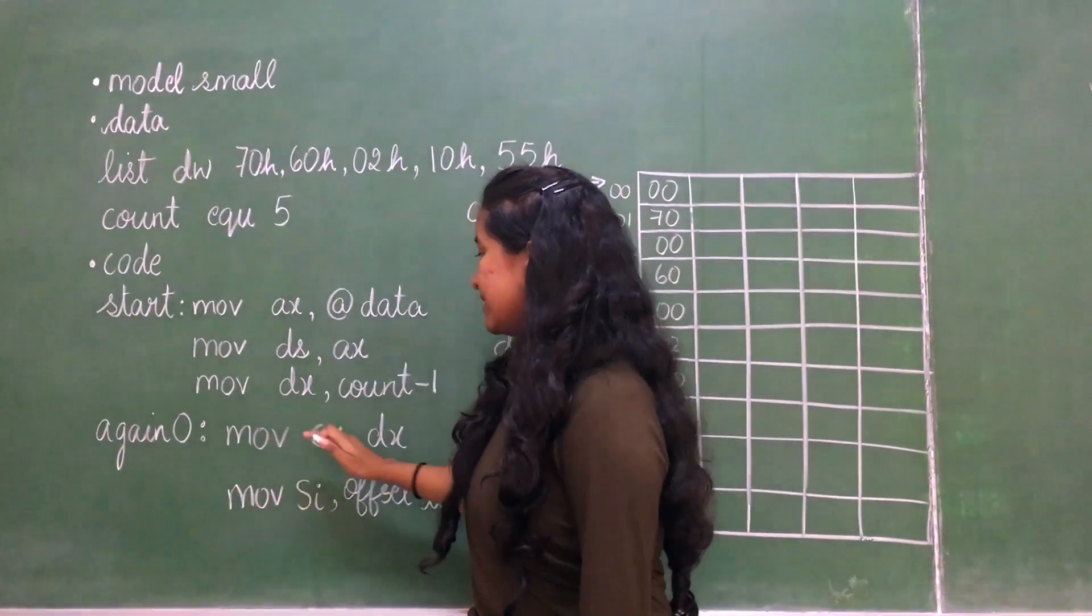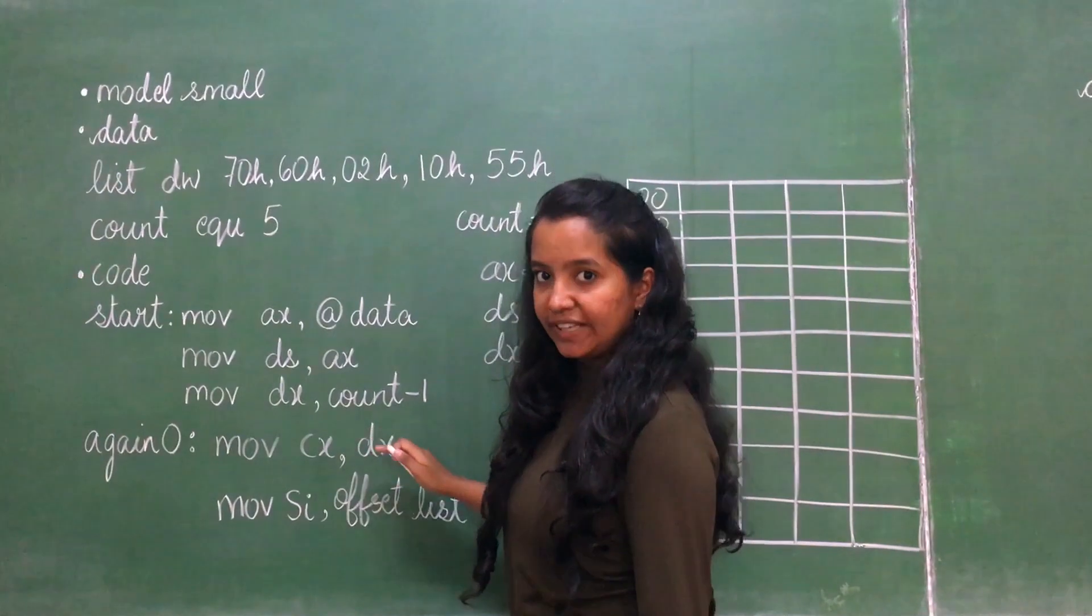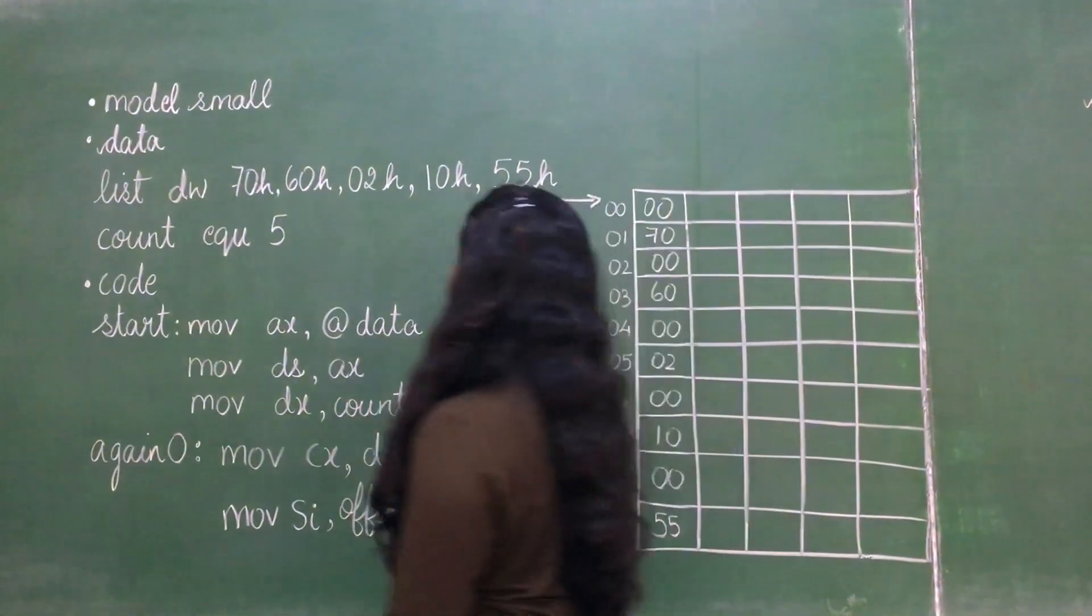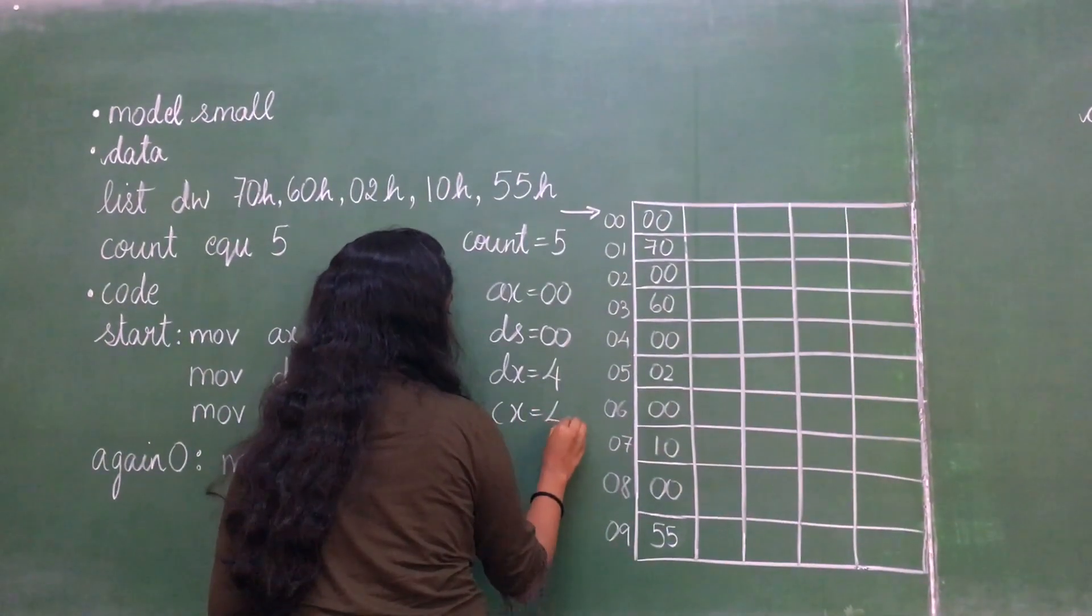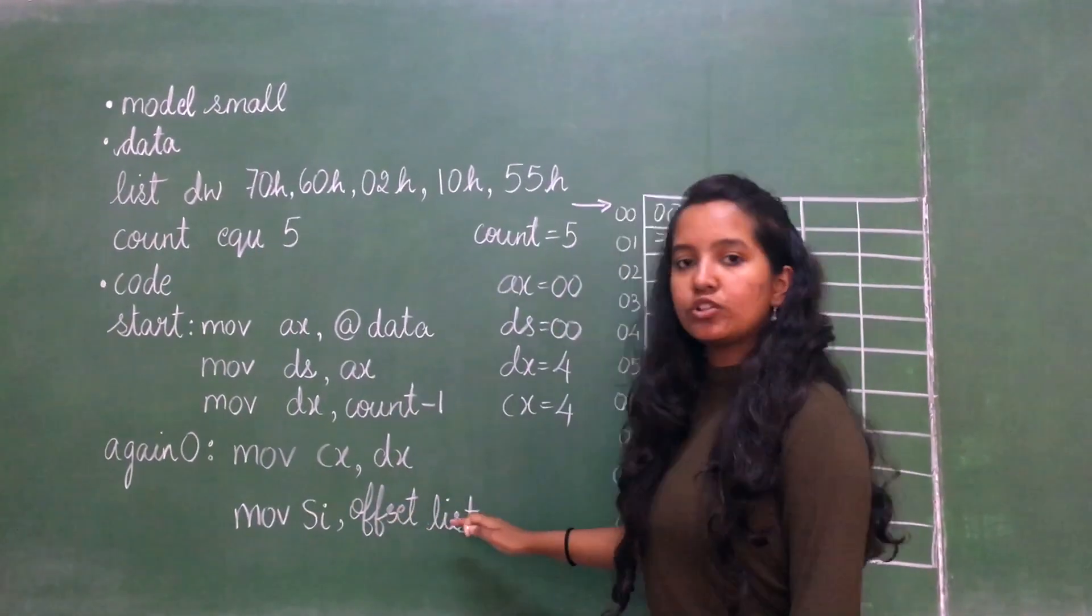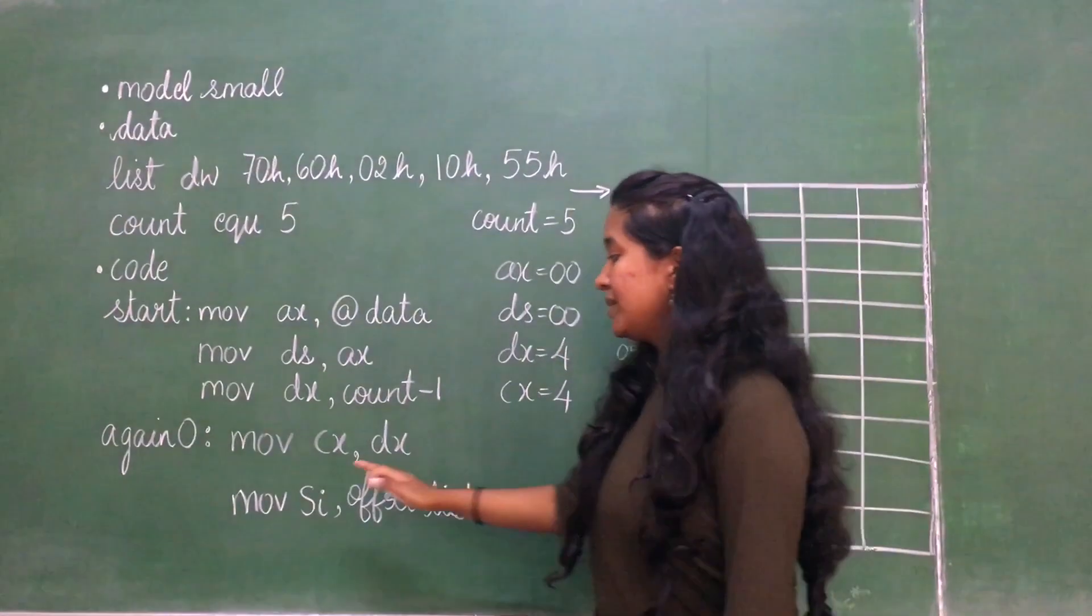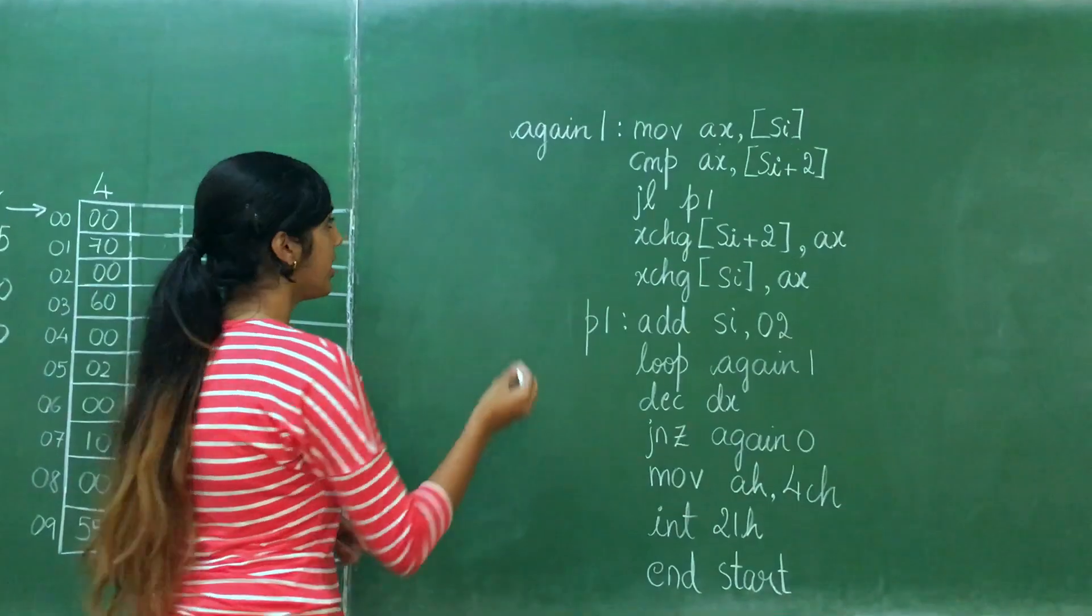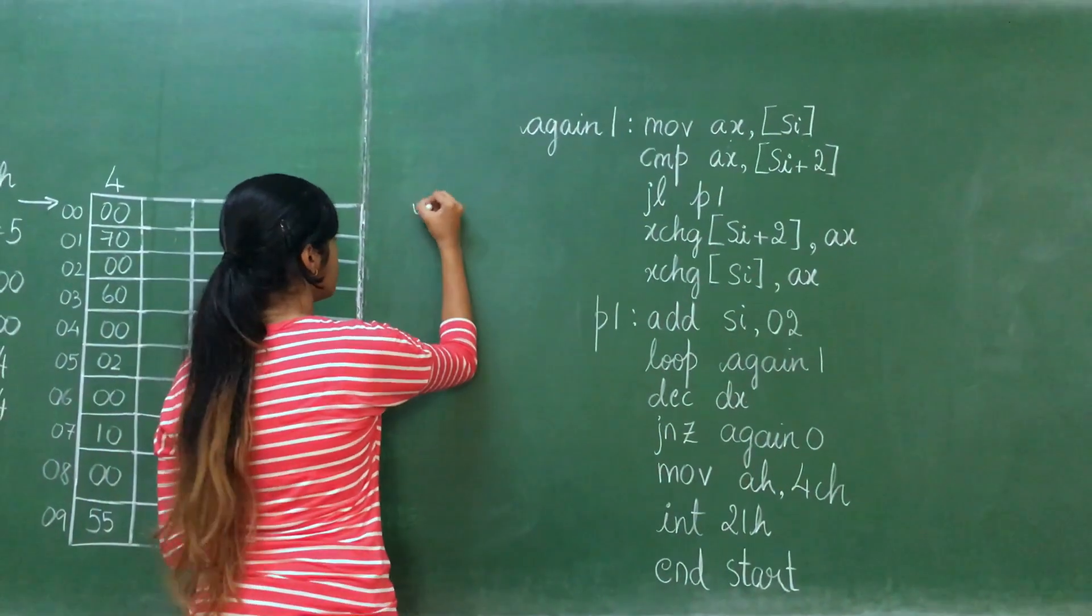Again0: Move CX, DX. The value of DX will be stored in CX, so now CX will also be equal to 4. Move SI, offset list. Offset list refers to the starting address of the data segment, and that will be stored in source index SI. Initially the value of SI is 0000.